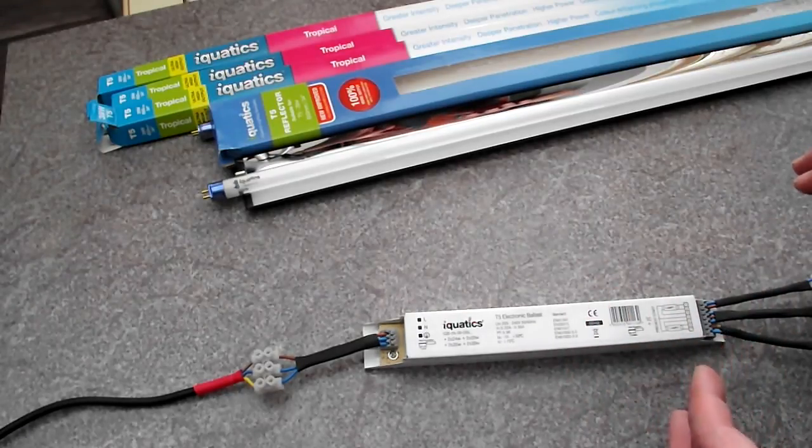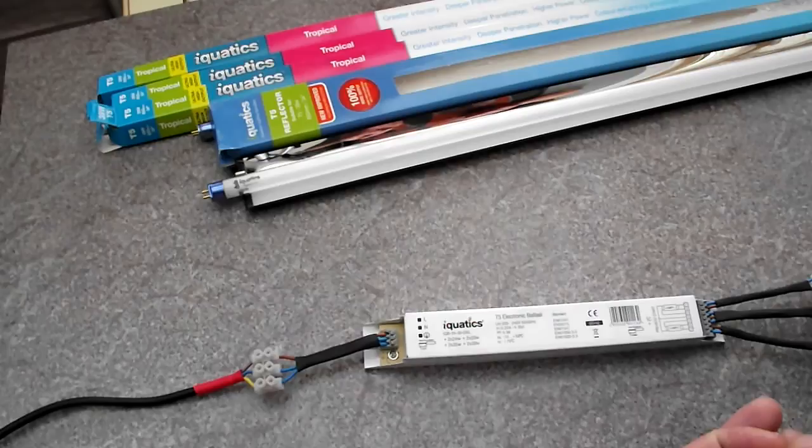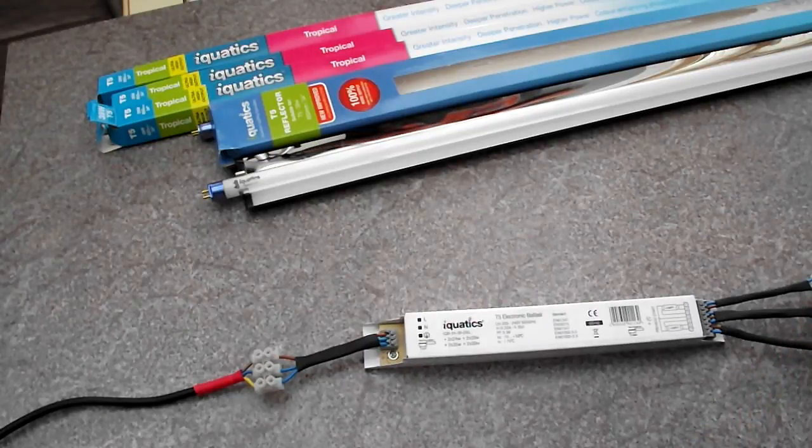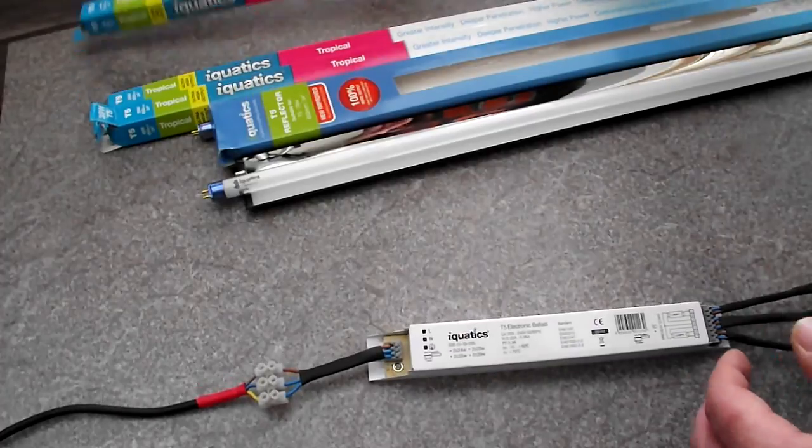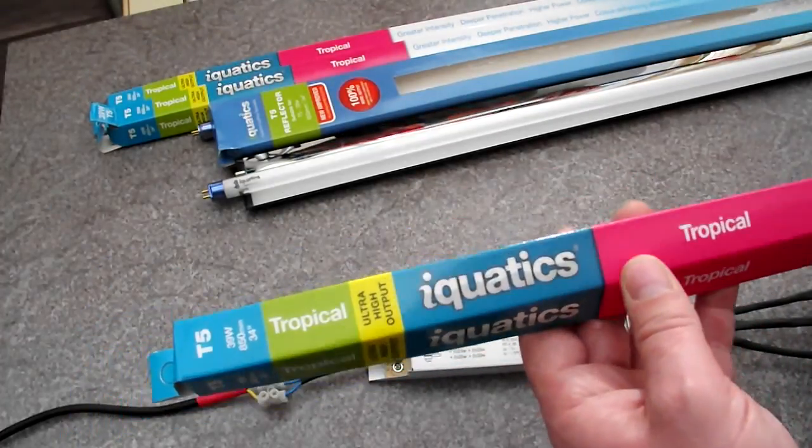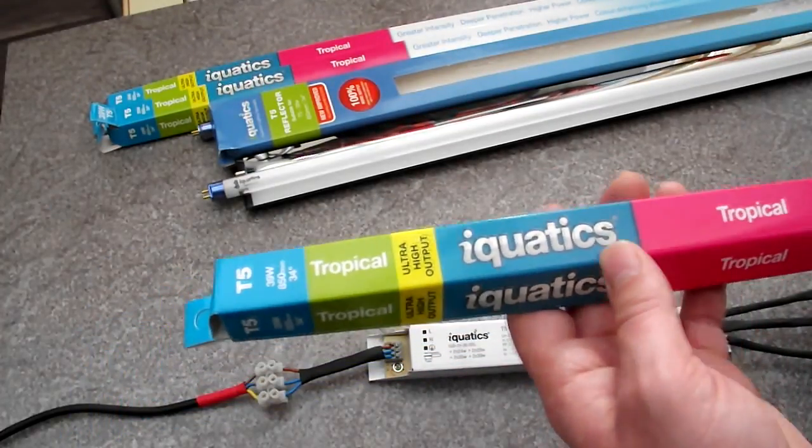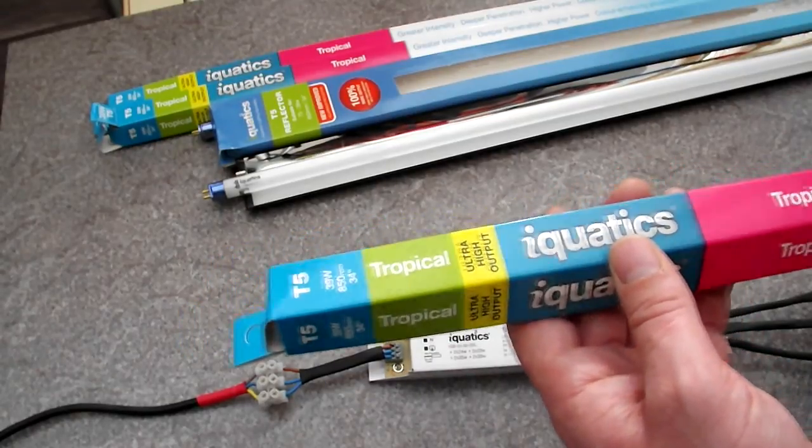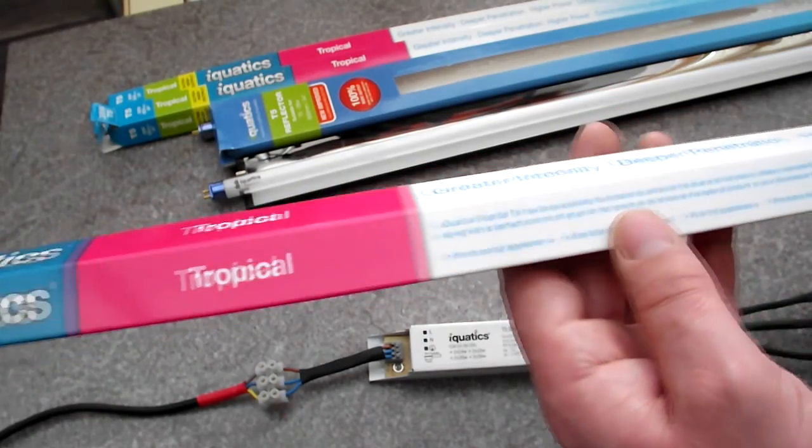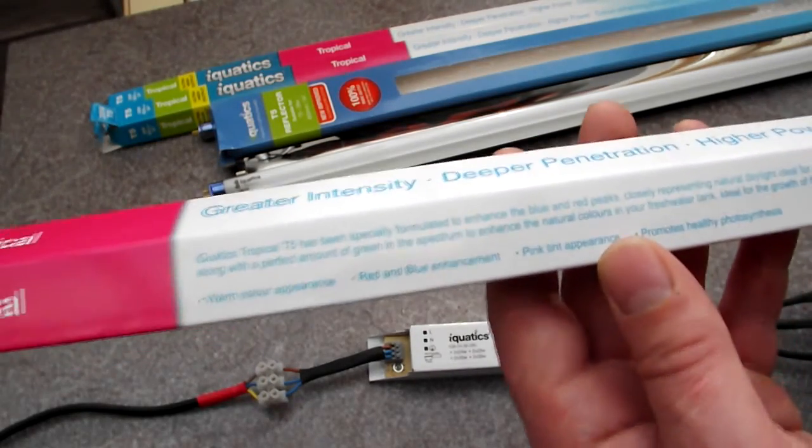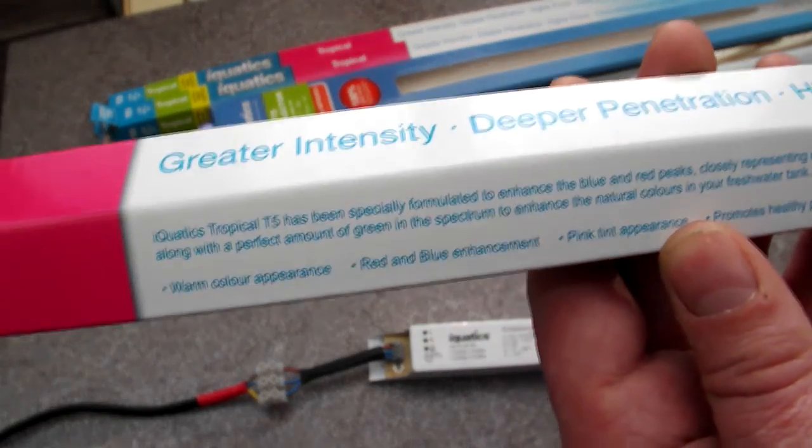This system which I'm setting up is the T5 system. It's got very high output. The tubes themselves are the Aquatics high output, ultra high output tubes. These are 39 watt, about three foot long. I'll show you there, you can see it.